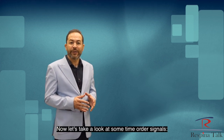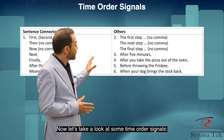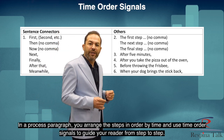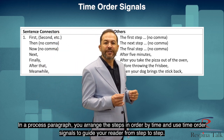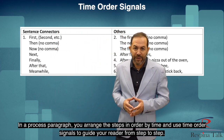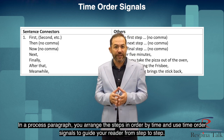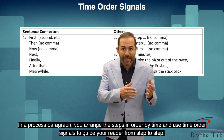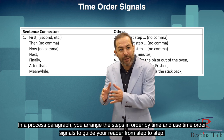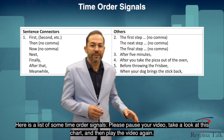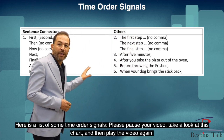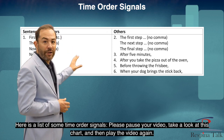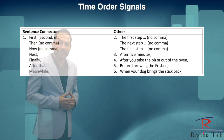Now let's take a look at some time order signals. In a process paragraph, you arrange the steps in order by time and use time order signals to guide your reader from step to step. Here's a list of some time order signals. Please pause your video, take a look at this chart, and then play the video again.